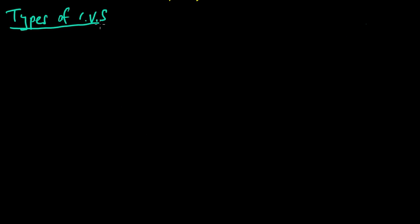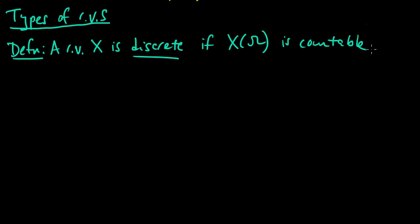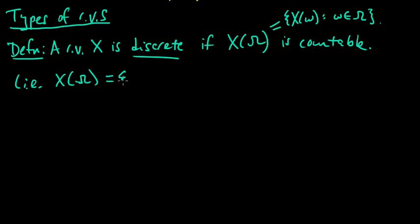Now that we know what a random variable is, let's look at some different types of random variables. There are two main types of random variables that you will encounter — 99.9% of them fall into one of these two cases. The first one: we say a random variable X is discrete if the set X(omega) is countable. By this I mean the set of all values that X takes as omega ranges over the sample space. By countable, I just mean that this set can be written as a sequence x1, x2, x3, and so on — it can be counted. It could be infinite, but it's countable.